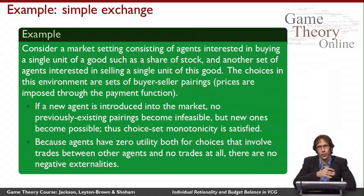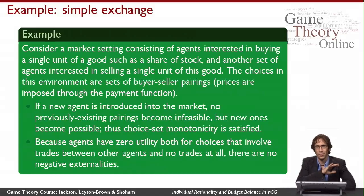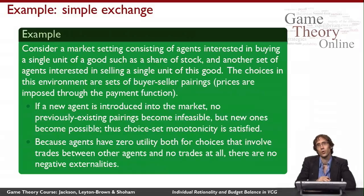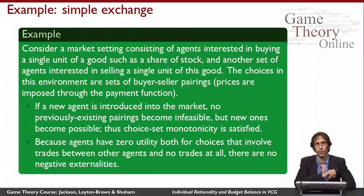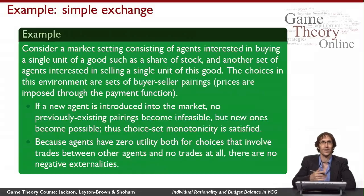Now let's look at a richer example where the set of choices does change: a simplified stock market with two kinds of agents. Some have a single unit of stock they want to sell, and others want to buy one share. The choices the mechanism can make are different ways of pairing together buyers and sellers — every buyer interacts with only one seller, every seller with only one buyer, and nobody has to interact. So we have various pairings ranging from nobody paired up to as many people as possible paired.